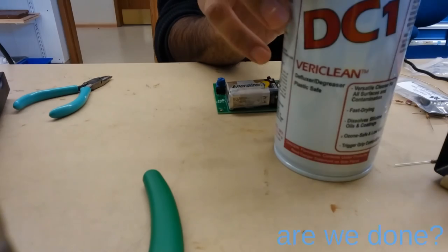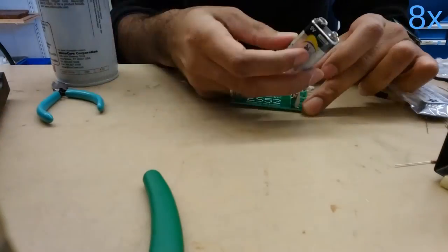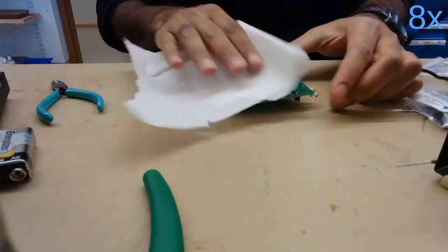Still not done. Remember we got to clean that flux off. So this is some flux remover, just branded Very Clean. So it's just really simple. Remove your battery first, spray the board both sides and wipe it down with a paper towel.